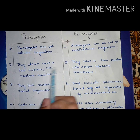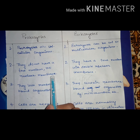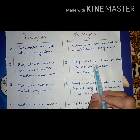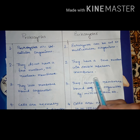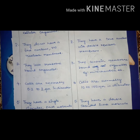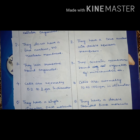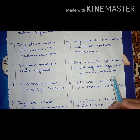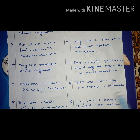Prokaryotes do not have a true nucleus — no nuclear membrane is present. Eukaryotes have a true nucleus with a double nuclear membrane. Prokaryotes lack membrane-bound organelles, whereas eukaryotes contain membrane-bound organelles such as mitochondria and many more.